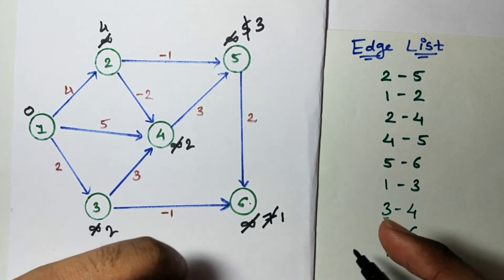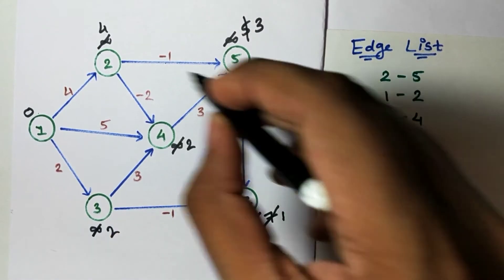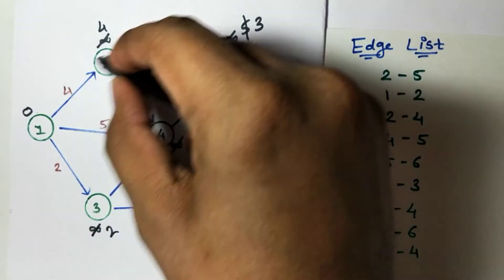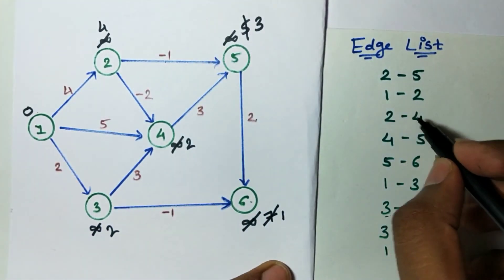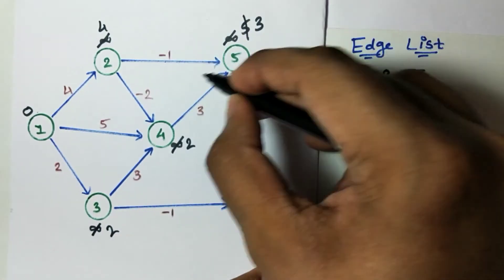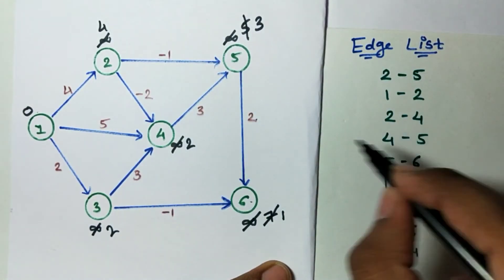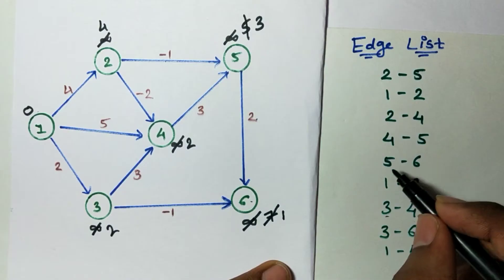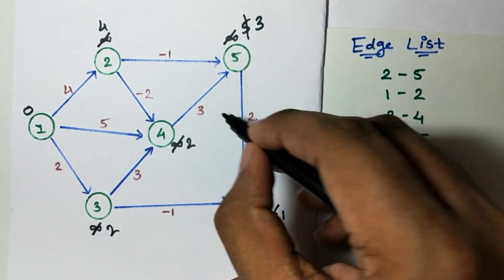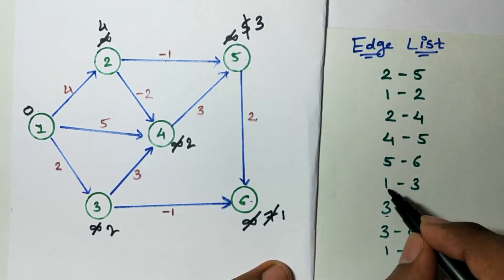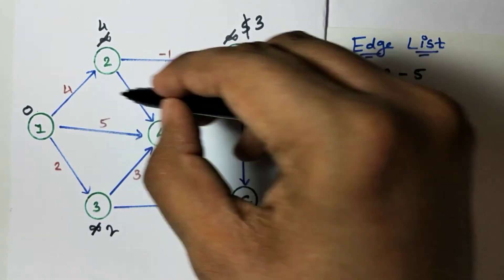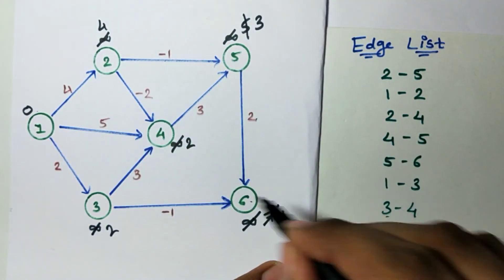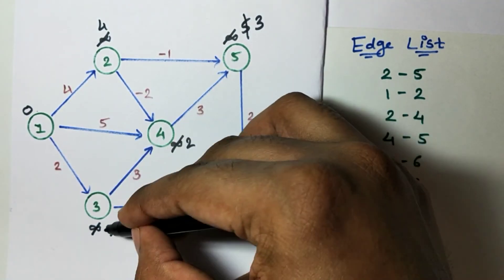Now perform the third iteration. Edge 2 to 5: 4 minus 1 is 3, equal to 3, don't change. Edge 1 to 2: 0 plus 4 is 4, don't change. Edge 2 to 4: 4 minus 2 is 2, don't change. Edge 4 to 5: 2 plus 3 is 5, greater than 3, don't change. Edge 5 to 6: 3 plus 5, greater than 1, don't change. Edge 1 to 3: 0 plus 2 is 2, don't change.